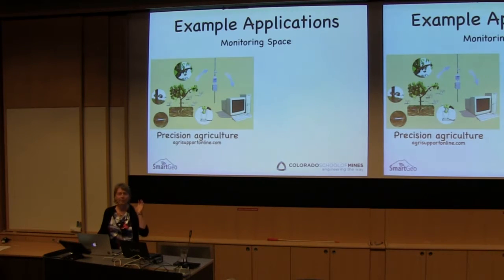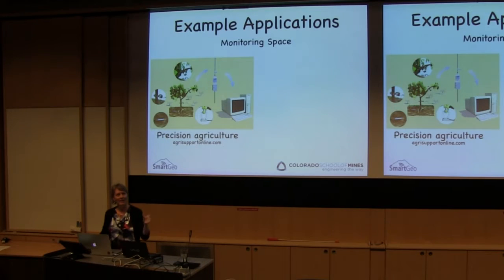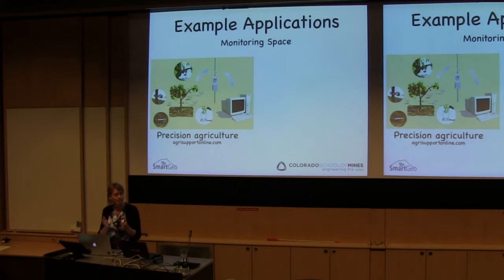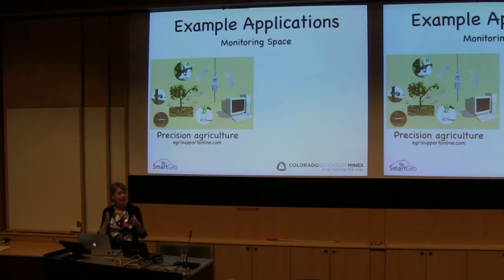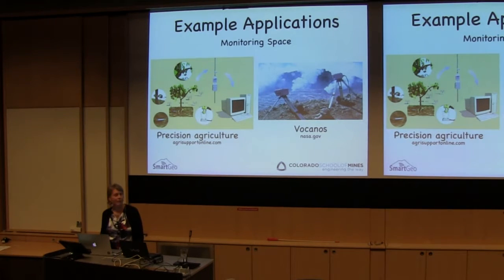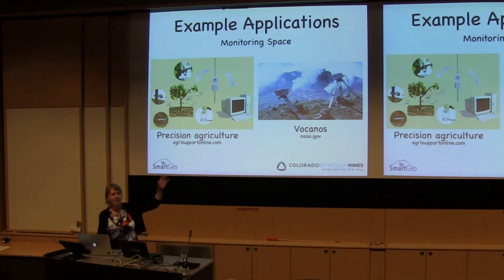Basically what they're doing is monitoring the plants and then giving the plants water when the plant needs water, or fertilizer when the plant needs fertilizer. You don't water every morning at 6 a.m. — you water when the plant needs water. There are several vineyards in California that are really jumping on this type of technology. There's also things happening where we're watching for hazardous events, such as volcano monitoring. These are a couple of applications of monitoring the space.